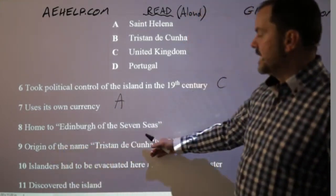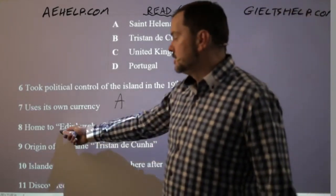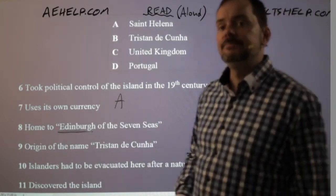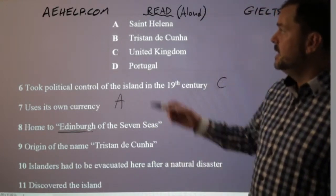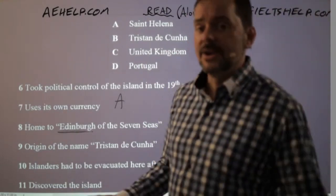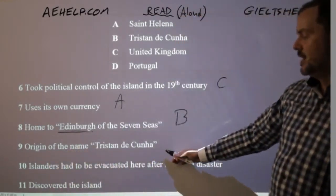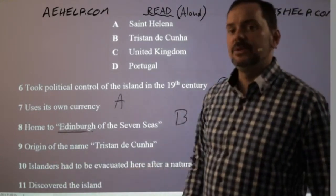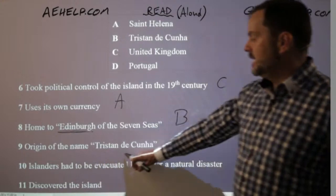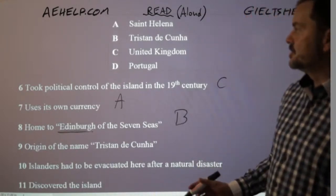Question 8: 'home to Edinburgh of the Seven Seas.' That should be a given — Tristan da Cunha. The passage says Tristan da Cunha is also known as Edinburgh of the Seven Seas. Question 9: 'origin of the name Tristan da Cunha.' That was Portugal — the captain who discovered the island in the 16th century was Portuguese. With good reading you should not have to search for these answers.